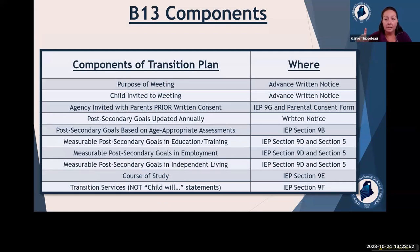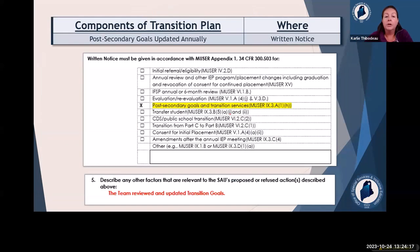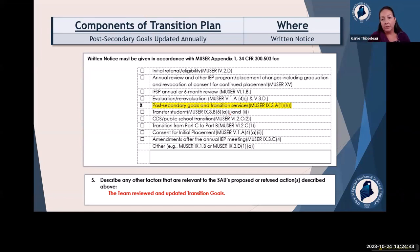Next, we're moving on to post-secondary goals being updated annually — we look in the written notice for this. In the written notice, make sure to check off 'post-secondary goals and transition services.' Then somewhere in the written notice, include a statement along the lines of 'the team reviewed and updated transition goals' — something to let us know the transition plan has been updated by the team.